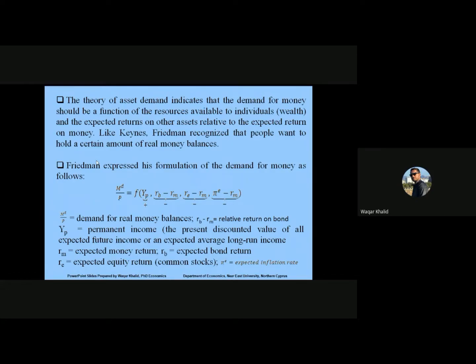Like Keynes, Friedman recognized that people want to hold a certain amount of real money balances. For example, if individuals have different resources or assets — some in the form of wealth and others in the form of bonds — the theory of asset demand indicates that the demand for money should be a function of the resources available to individuals and the expected returns on other assets relative to the expected return on money.